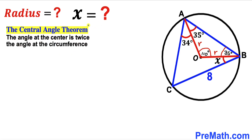Now let's recall the central angle theorem: the angle at the center is twice the angle at the circumference. We can see that angle AOB is 110 degrees and is the angle at the center, whereas angle ACB is the angle at the circumference. According to the central angle theorem, angle ACB is half of 110 degrees, which gives us 55 degrees.